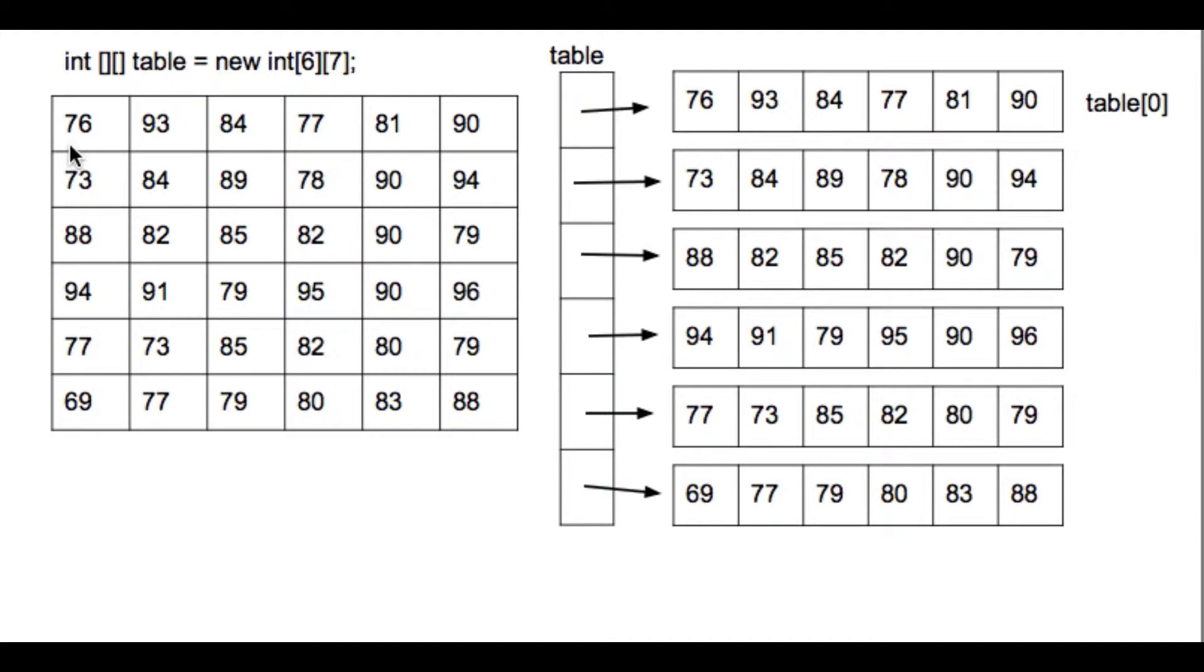Now it's perfectly legitimate to view, to conceive two-dimensional arrays, a table like this. As long as you understand that what we're really dealing with is an array of arrays. So each of what here I call is, I'm calling a row, is in fact a separate array,